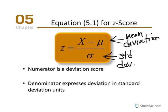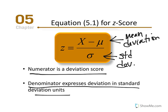Mathematically, that makes sense. The deviation tells us the distance from the mean, and if we divide by standard deviation units, we express that deviation in that standardized unit of measurement. The numerator is expressed as a deviation score, the denominator is in standard deviation units, so the Z-score always expresses distance in standard deviation units.